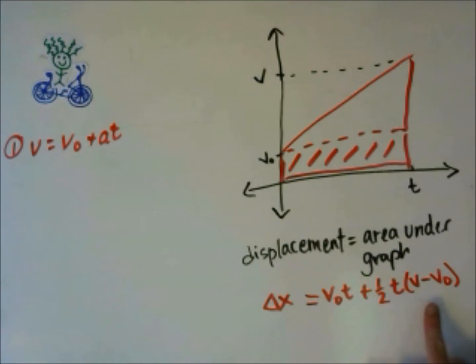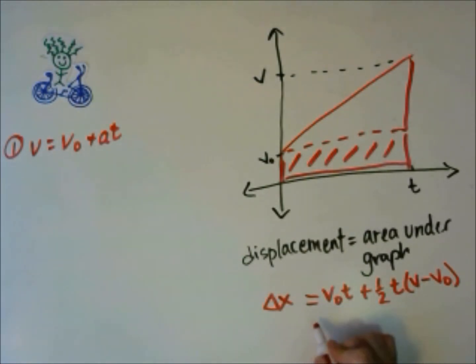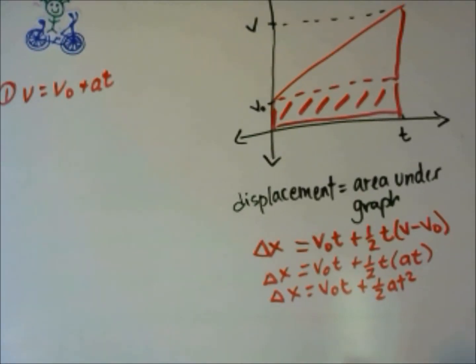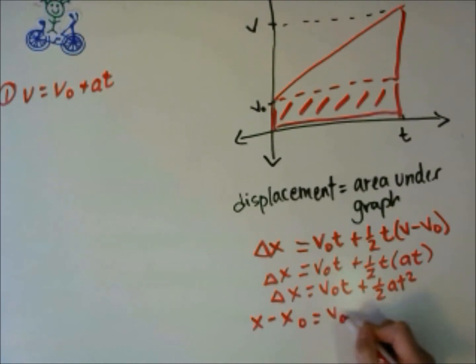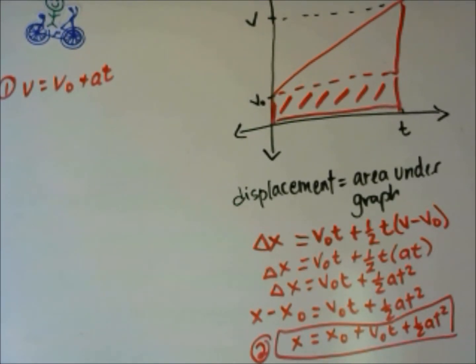We can see that V minus V0 from this equation gives us AT, so we'll replace that. Next we'll combine the two T's together into T squared. We'll replace delta x with x minus x0 and get x by itself on the left-hand side. This is our second kinematics equation.